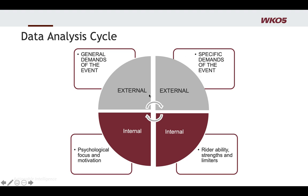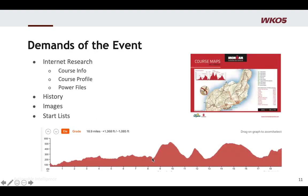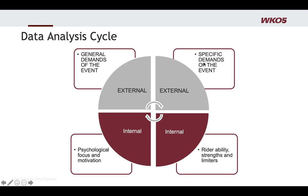Then I start talking about the specific demands. This course has three specific climbs — so that's where I start. I pull all data analytics on those climbs: what's the grade, what gearing demands are there. It also has one or two tricky descents where we'll make big decisions on aerodynamics and handling. I'm breaking the course down into very specific segments using Xert segments. Your event might have a circuit race that goes up a two-minute climb 11 times, and you have to be prepared for that — that's the specific type of demand.